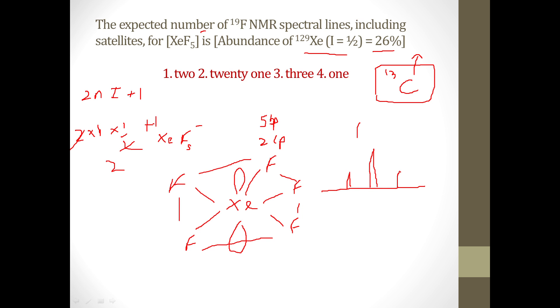Had it been 2.6 percent these peaks would have been even smaller. So right now they are about 26 percent of the natural abundance, so that's why these peaks are small in size. They're about 26 percent, so that's why these peaks are small in size.